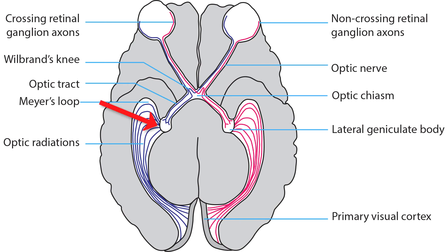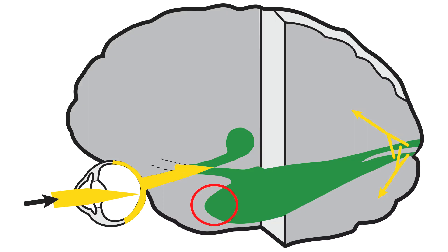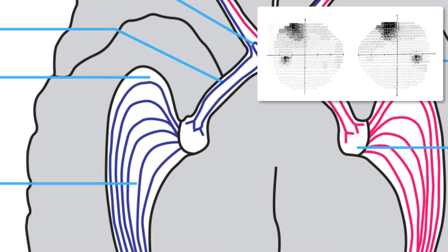Axons leave the lateral geniculate body in the root of the optic radiations. Inferior axons carrying visual information from the superior visual field are stretched around the temporal horn of the lateral ventricle — this bundle is called Myers loop. Lesions in the anterior temporal lobe, especially lobectomies for intractable epilepsy, will pick off Myers loop and cause superior visual field defects with a distinctive wedge shape.